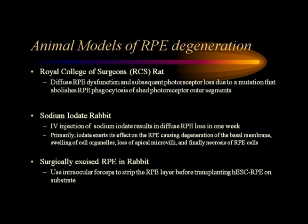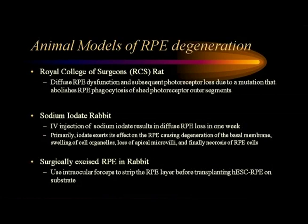The three animal models are: the Genetic Royal College of Surgeon model with the mutation that affects the RPE; a toxin model where you inject intravenous sodium iodate; and a surgical model where I can go in and remove the RPE directly. So we have all three models available.